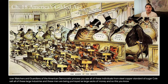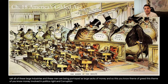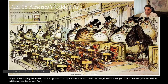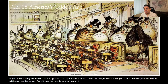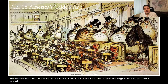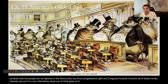This theme of greed, of money involved in politics and corruption, is ripe. I love this imagery. If you notice on the top left-hand side, all the way on the second floor, it says 'the people's entrance' — and it is closed, barred, with a big lock on it. It is very symbolic that the people are not allowed into the democratic progressions in Congress, while all of these money interests are. It is a very interesting visual cue of what goes on in American politics.